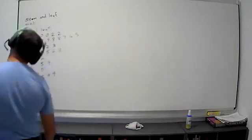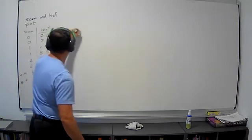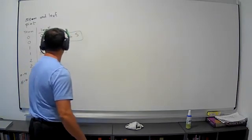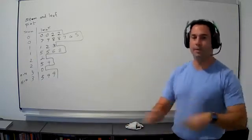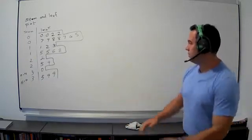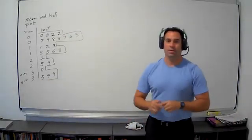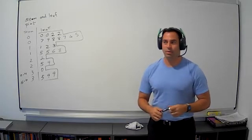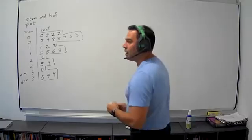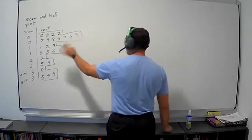And now if you turn your head to the side like this — look what you got. You got a histogram, a bar graph, a type of bar graph. You see it? You get the shape of the distribution. Isn't that cool? So let's go ahead and then discuss now what we're supposed to do.